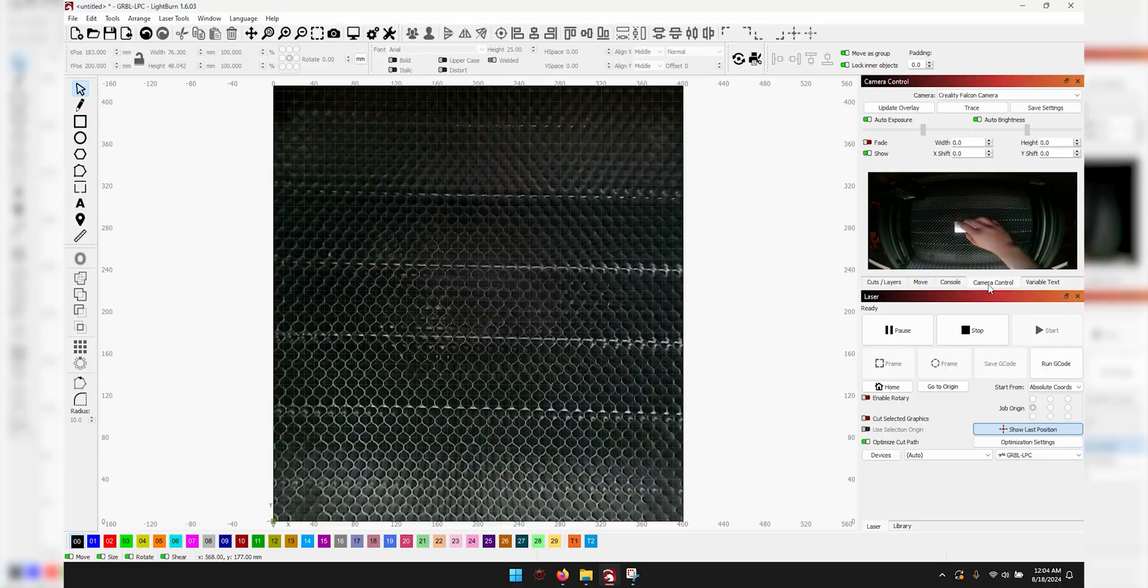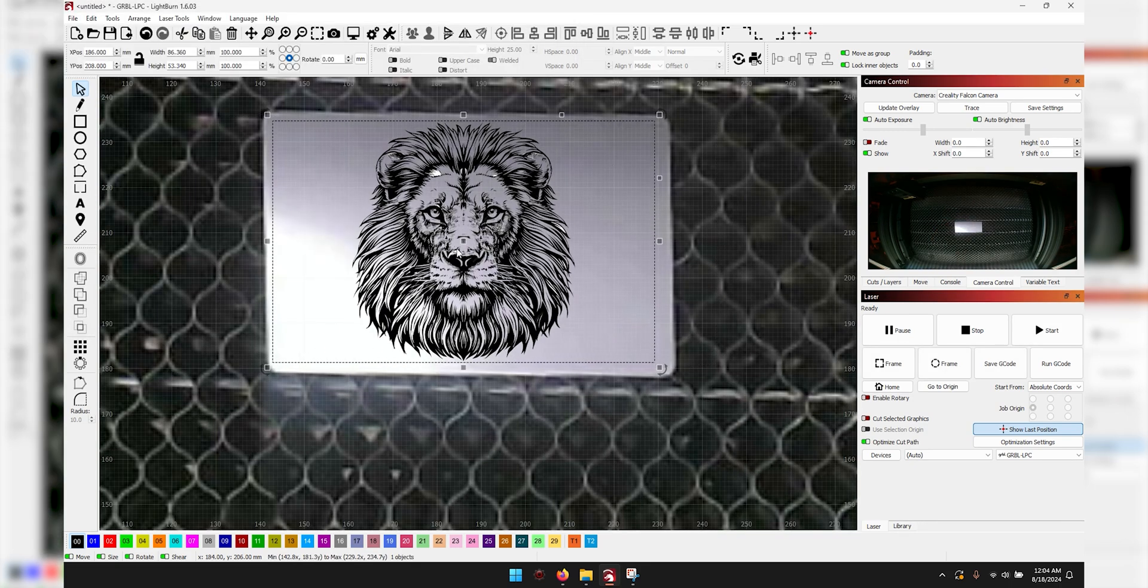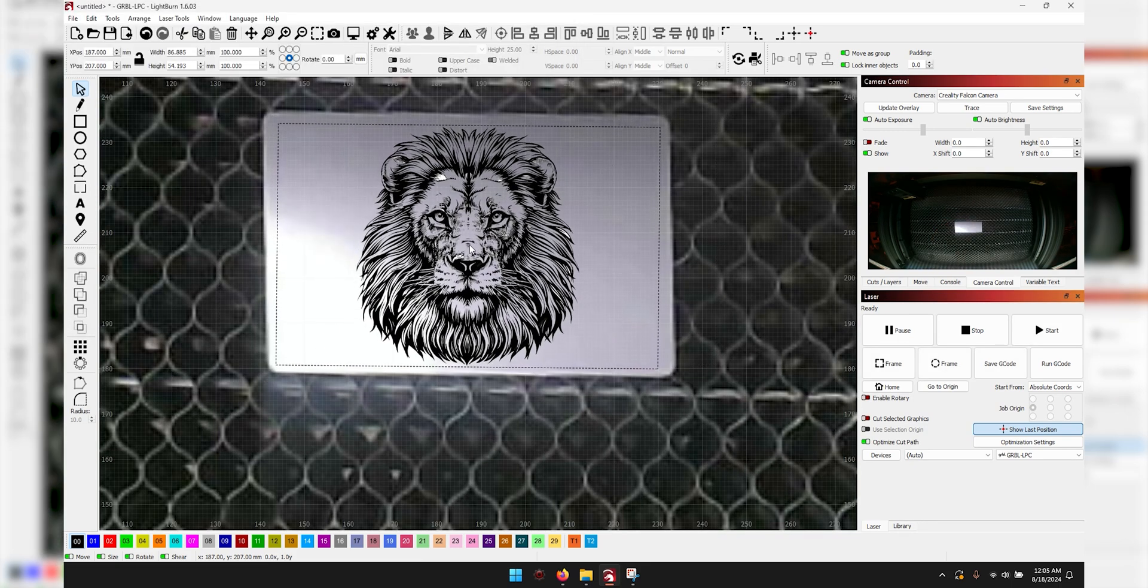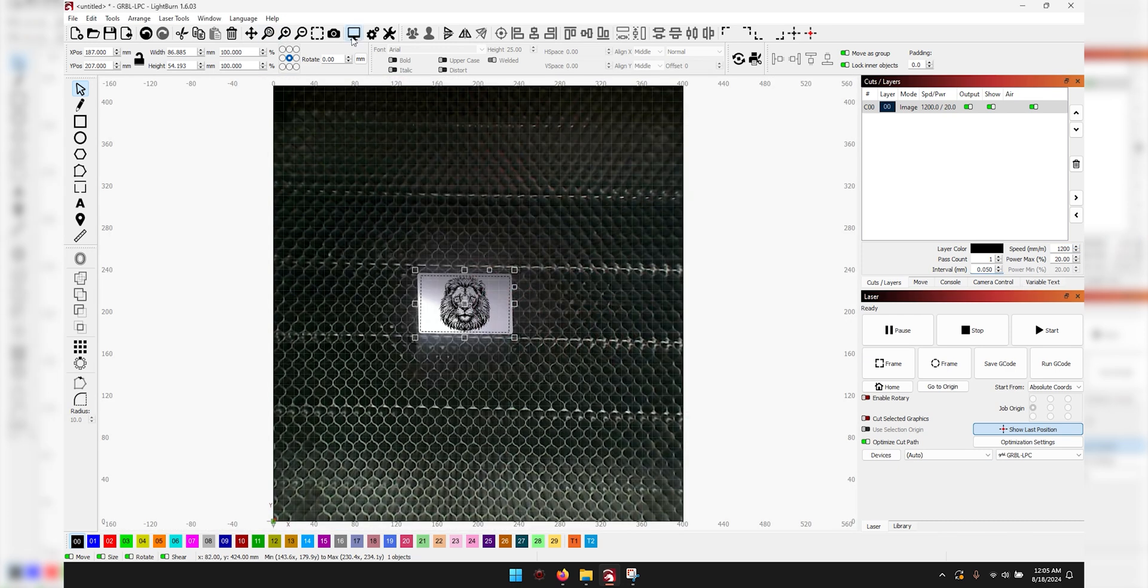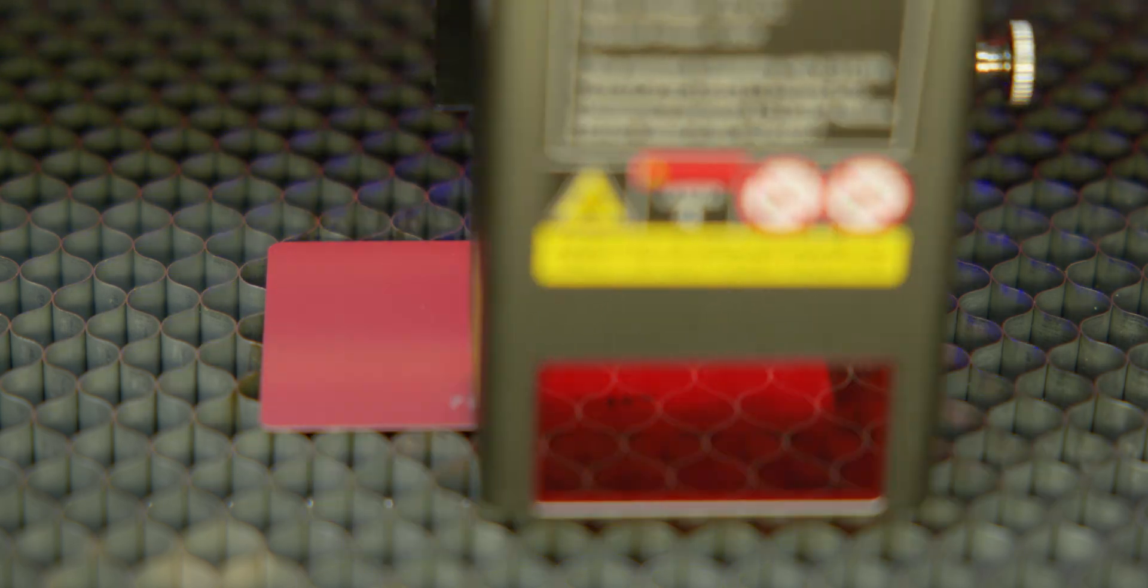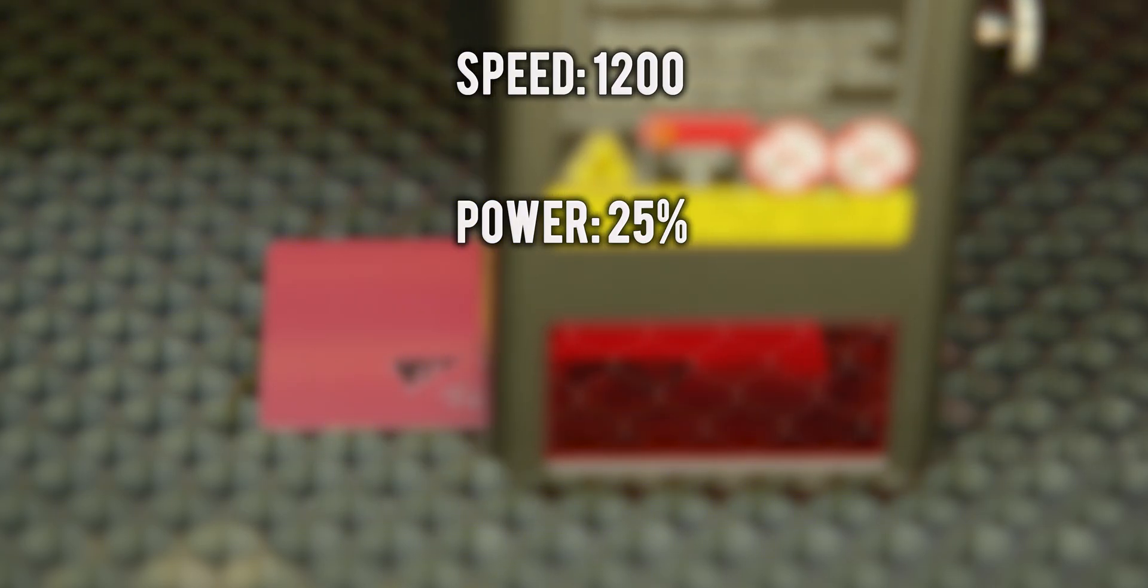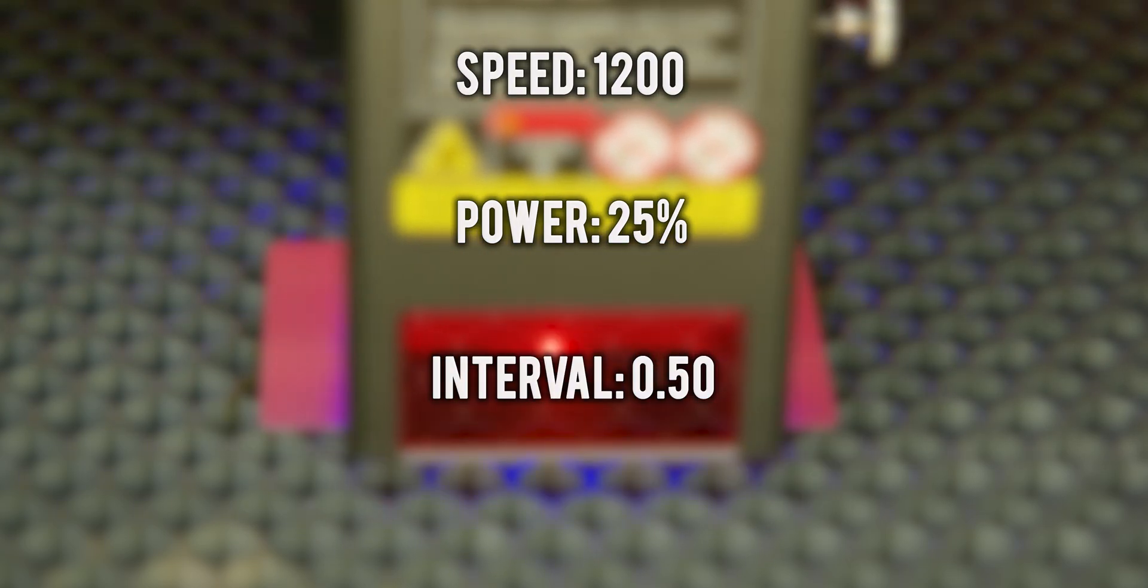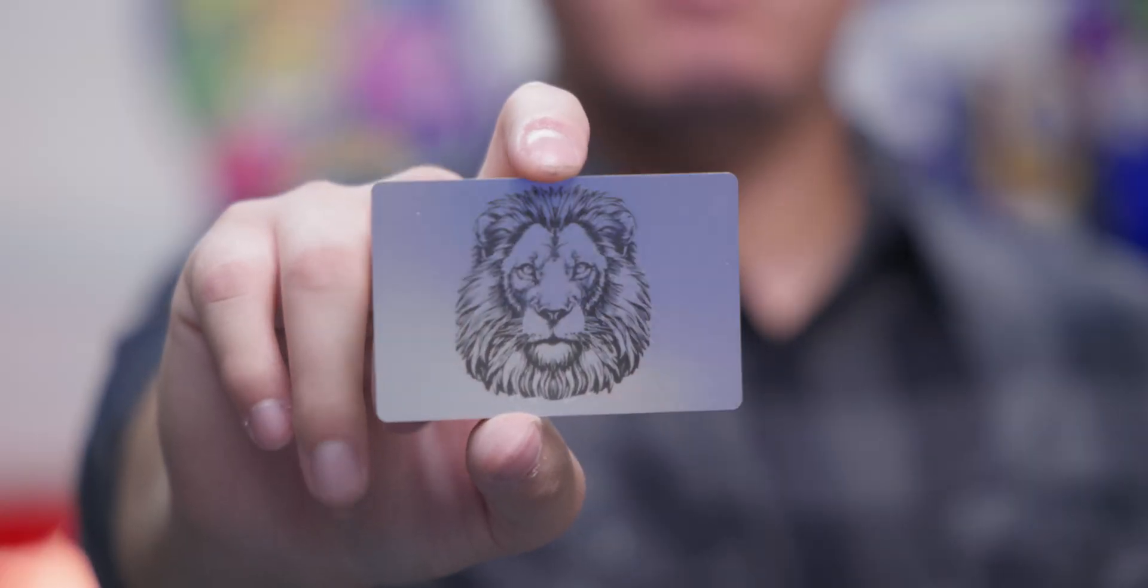The next test was on thin metal business cards. I wanted to see how detailed and accurate the laser could get with an SVG file, so I imported a lion with lots of lines and detail around the face. For this I needed to slow down the speed and interval to have enough time to engrave all the detail. I set it to 1200 speed at 25 power, 0.50 interval, and one pass count. The overall result looked amazing and turned out so detailed.